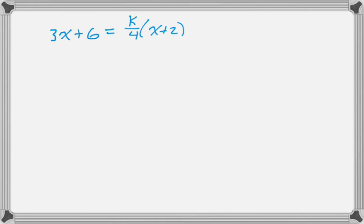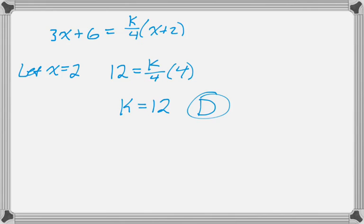This is number one, and we're given that 3x plus 6 equals k over 4 times the quantity x plus 2, and we're told that that's true for all values of x. If it's true for all values of x, then it's definitely true for x equals 2. So that'll give us just 12 equals k over 4 times 4, which means k equals 12, which means the answer is D.